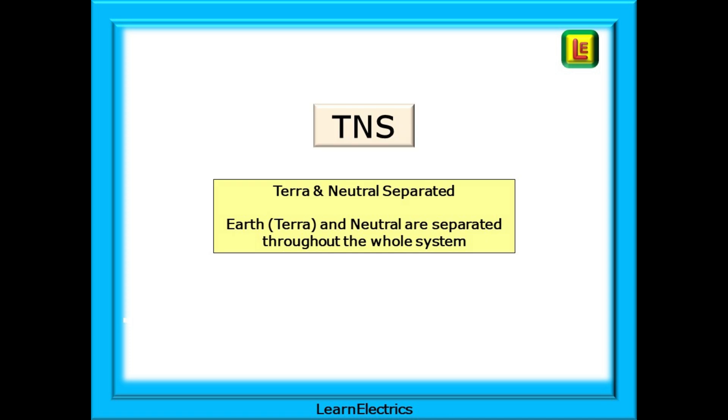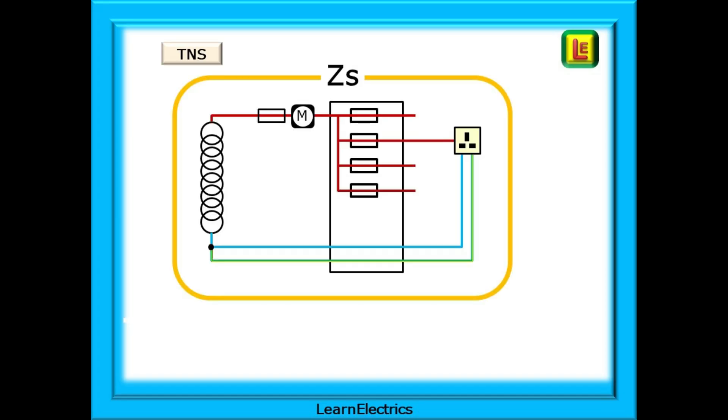The first system that we will look at is the TNS system. TNS stands for Terra and Neutral Separated. Terra is a Latin word for Earth. The Earth and the Neutral are separated throughout the whole system, as we shall see. This is a TNS system.